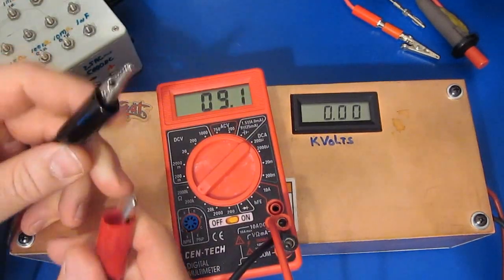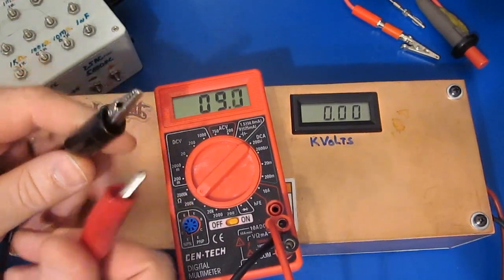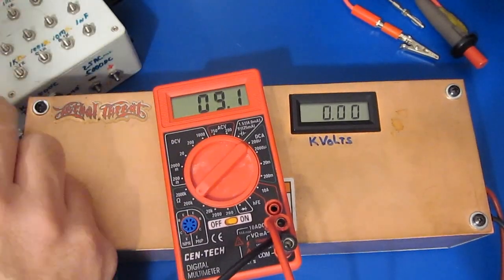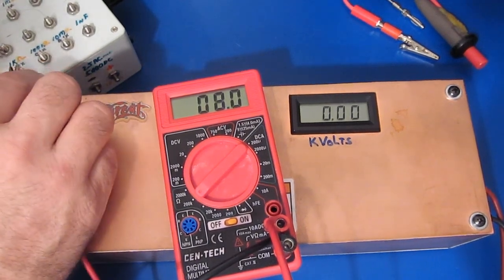You can see in 200k it's reading 9.1k with an open. So let's just try a 1k ohm resistor. See, it reads a dead short.